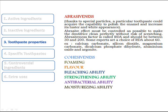Toothpaste has many properties that reflect its effectiveness. First, abrasiveness — thanks to special particles, a particular toothpaste can acquire the capability to polish the enamel and increase its luster and white appearance. The abrasive effect must be controlled to make the dentifrice clean perfectly without risk of scratching. The abrasiveness factor is called RDA and should be between 30 and 200, with some experts recommending around 60.